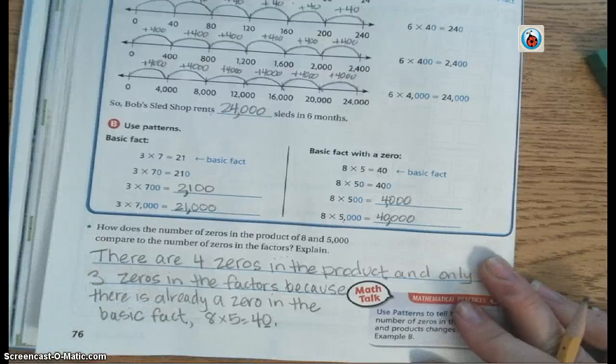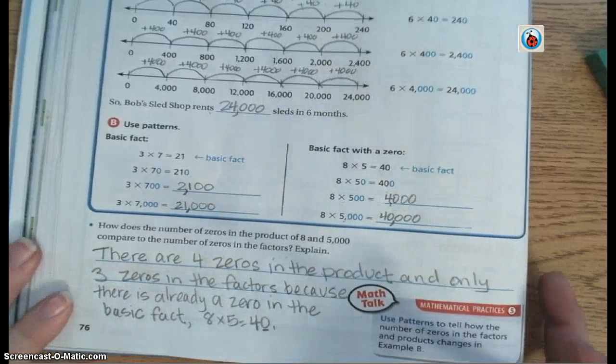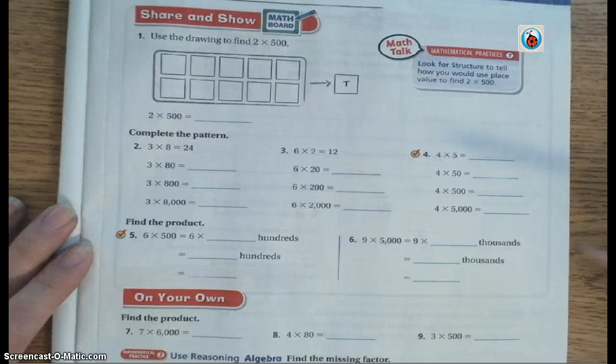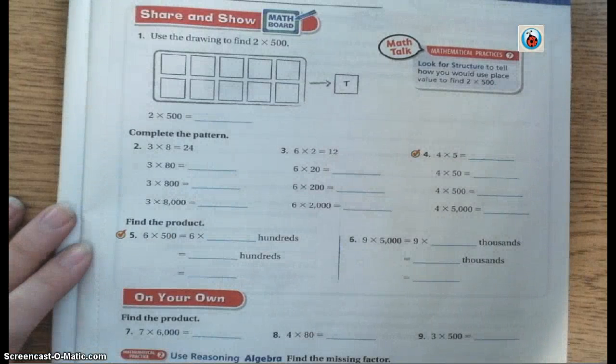Now we want you to go ahead and turn the page to page 77 and do the share and show section, numbers 1 through 6, on your own.